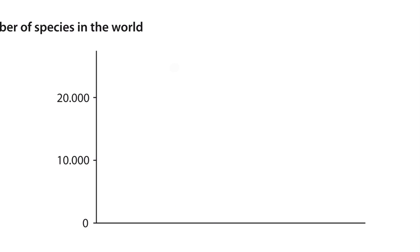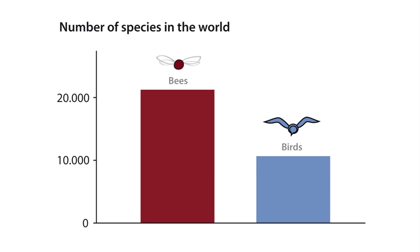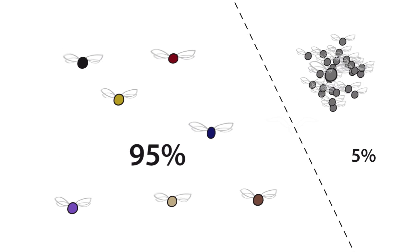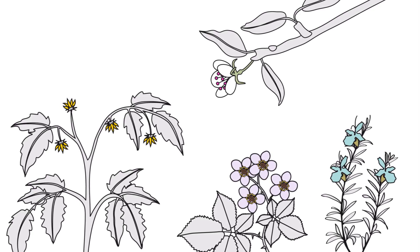There are more than 20,000 different species of bees in the world. For context, there are twice as many bee species as bird species. Most live solitary lives rather than nesting in colonies with a queen, and they are crucial for plants.